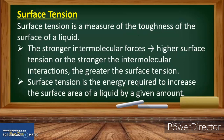Surface tension is a measure of the toughness of the surface of a liquid. The stronger the intermolecular forces, the higher the surface tension — or the stronger the intermolecular interactions, the greater the surface tension. Surface tension is the energy required to increase the surface area of a liquid by a given amount. Comparing condensed milk with water: condensed milk has higher surface tension, so you can place heavier, denser objects on condensed milk without them sinking, while in water, a dense object will sink easily.